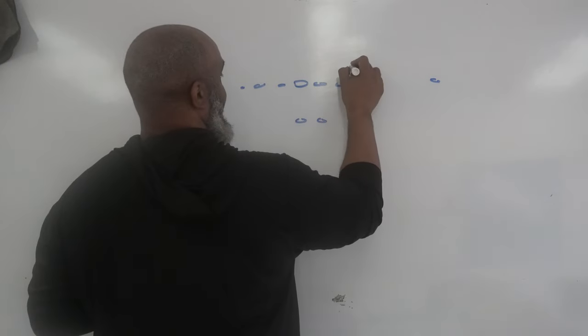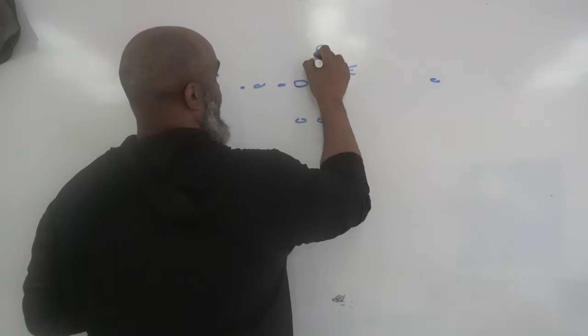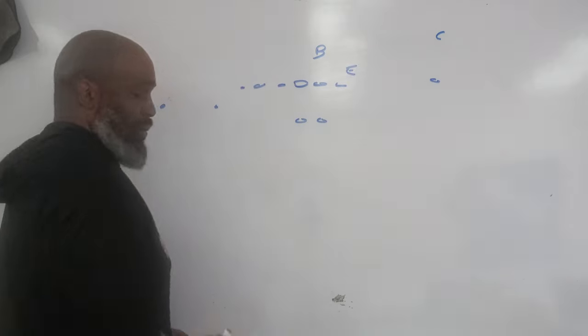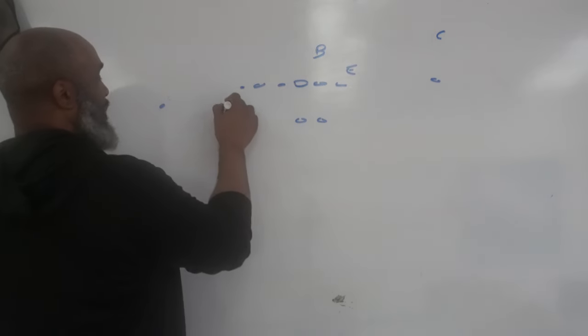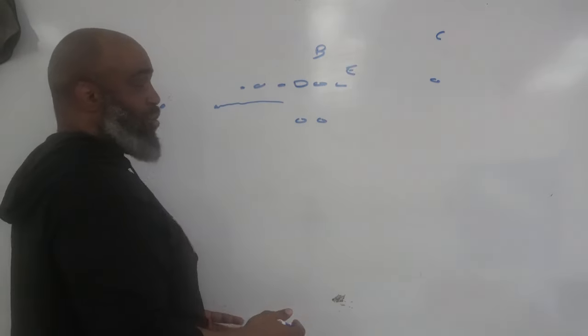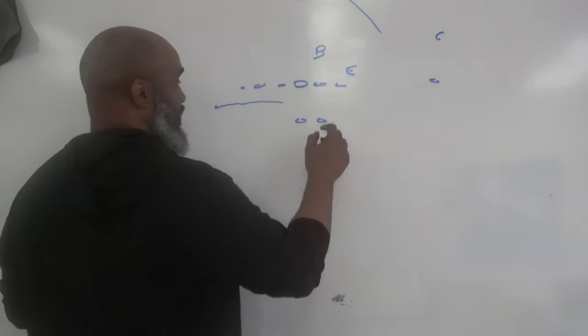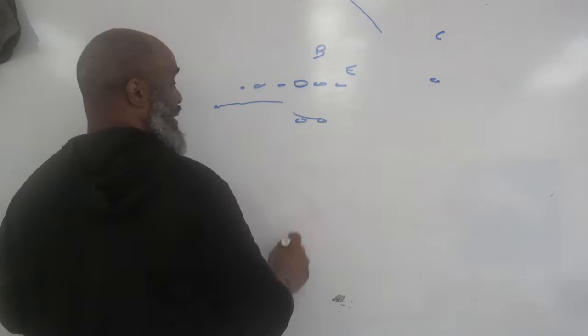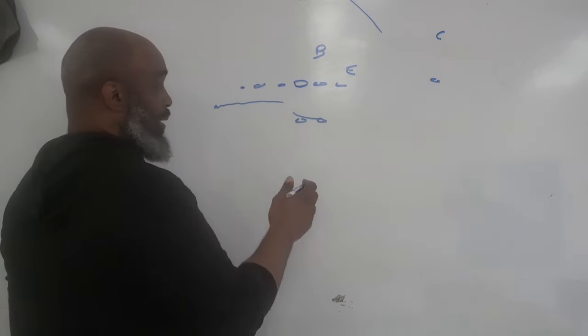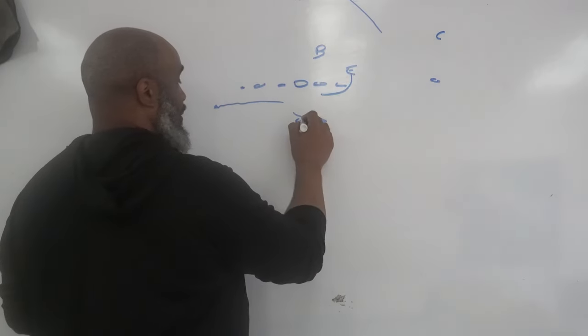All right. So we've got defensive end, got a backer, got a corner. So the first part of it, again, they'll bring this guy in motion. And if they're in some kind of zone or whatever, they just bump it out or maybe rotate a guy down like the safety or whatever. If they're going to run that inside zone or whatever they choose the run play to be, if he crashes down, Lamar pulls it.